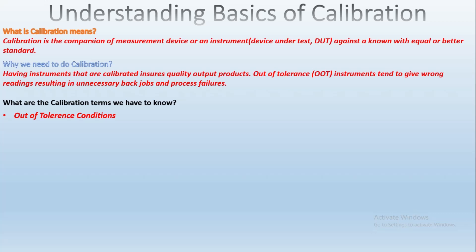The next term is optimization. Adjusting a measuring instrument to make it more accurate is not part of a typical calibration, and is frequently referred to as optimizing or nominalizing an instrument. This is a common misconception — only reputable and experienced calibration providers should be trusted to make adjustments on critical test equipment.